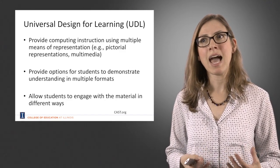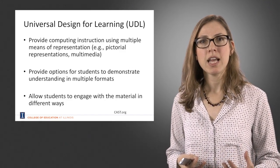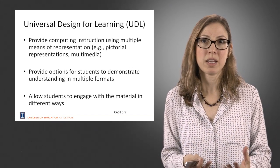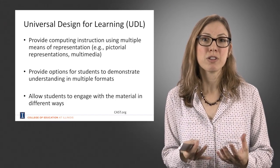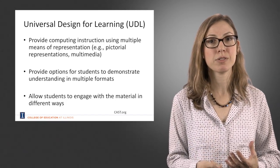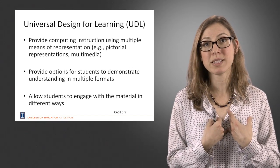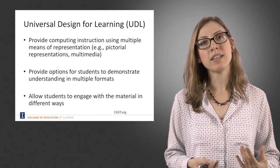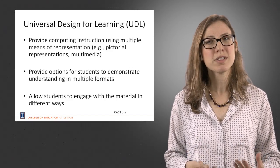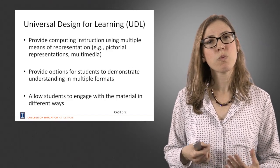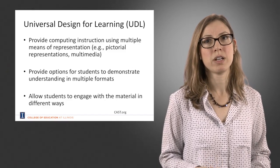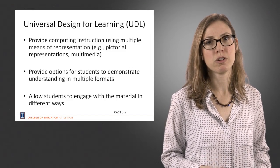The strategic network is the "how" of learning. If we think about how students show us that they understand something, we know they'll be able to do that in different ways with different preferences, which means we have to assess them in different ways. The affective network is really the "why" of learning — it's about motivation. What is it about learning that's going to make students really want to learn? What's going to motivate them?